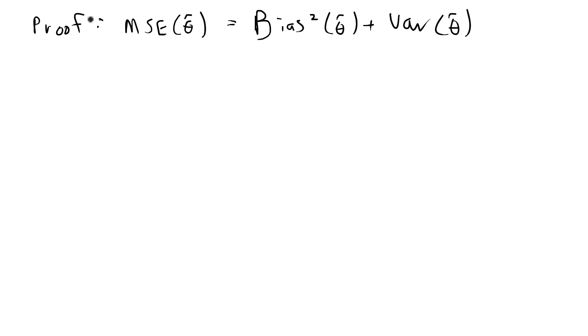Hey everyone! In this video I want to go over this statistics and probability proof. Basically I want to prove a well-defined relationship between the mean square error of an estimator and its bias and variance.